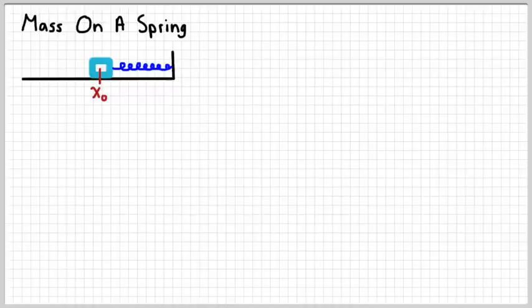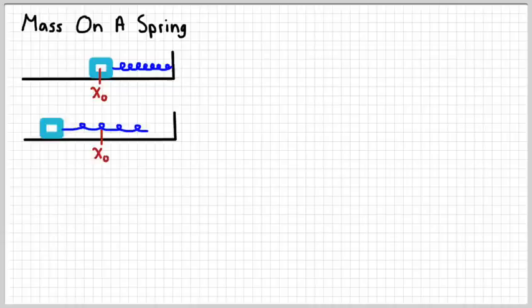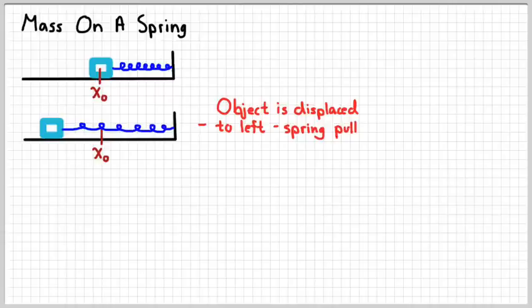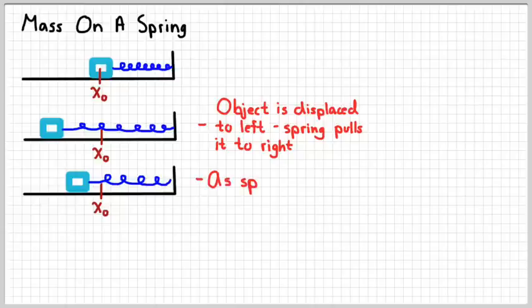Now, a mass on a spring, when it's unstretched, is naturally going to find its equilibrium position. I've designated that with an x subscript 0. Now, if we pull the object away from its equilibrium position, like so, then the spring is going to pull it towards the right. And so it'll start to move, if you let go of it, towards the right.